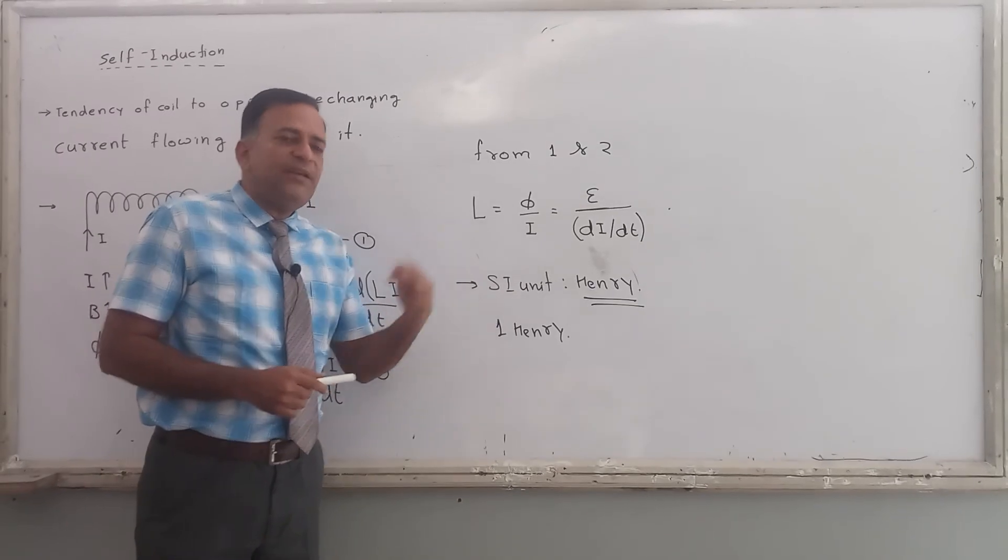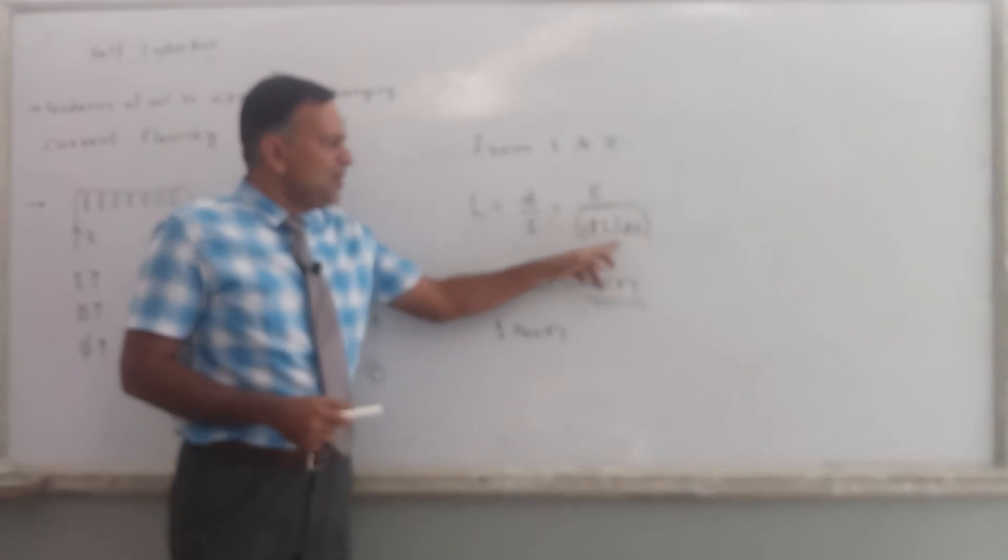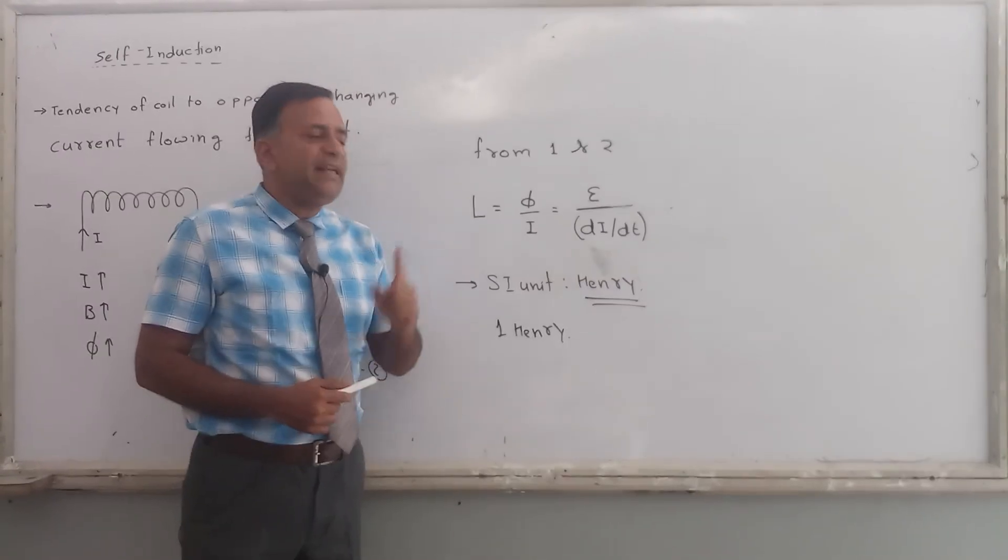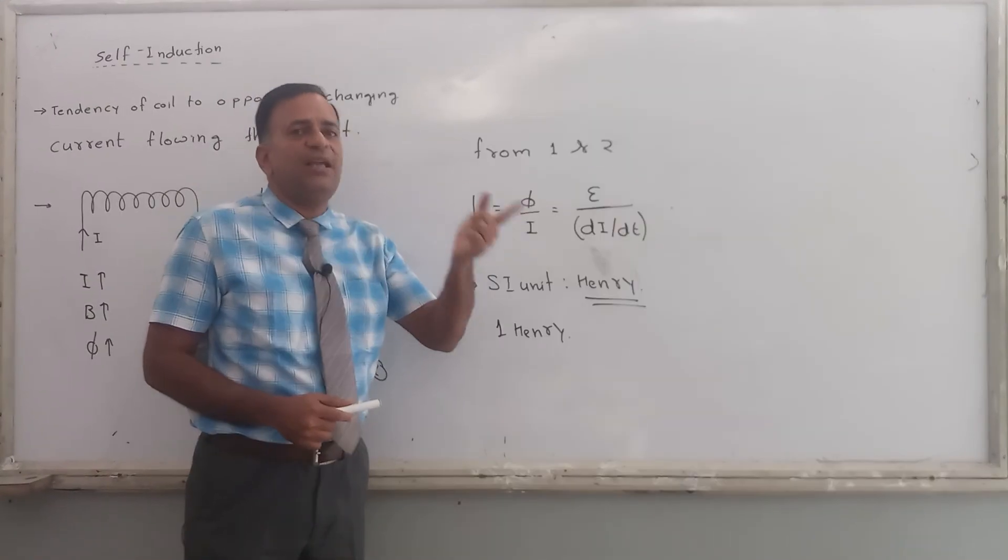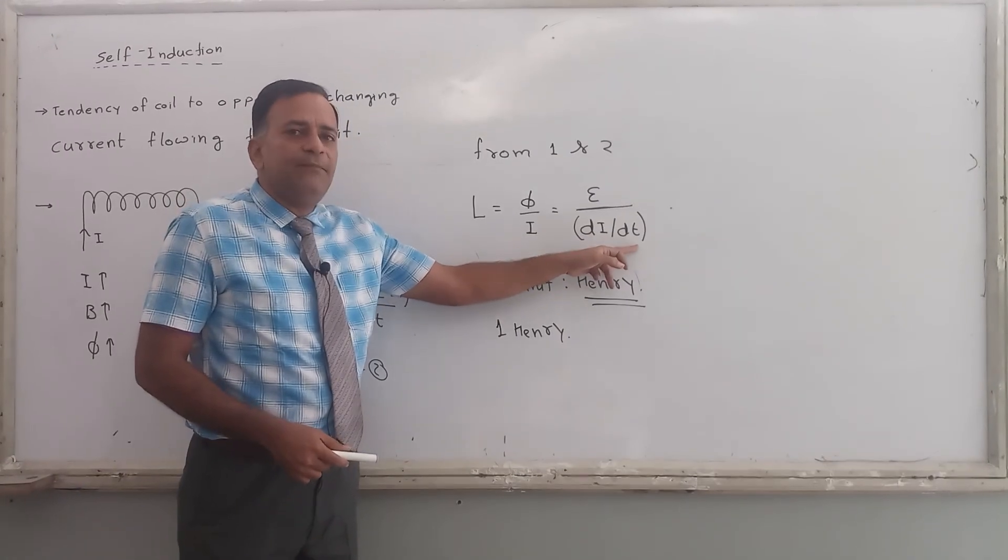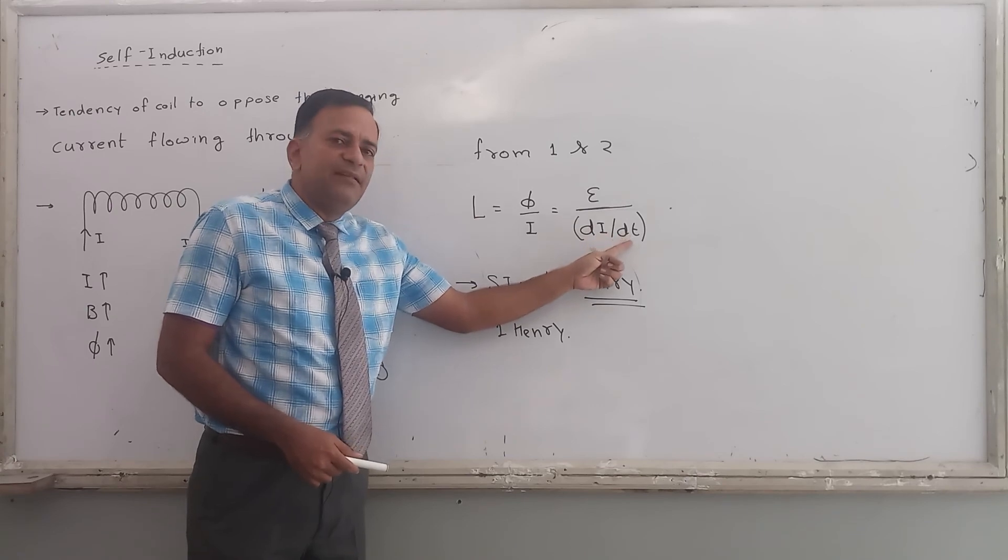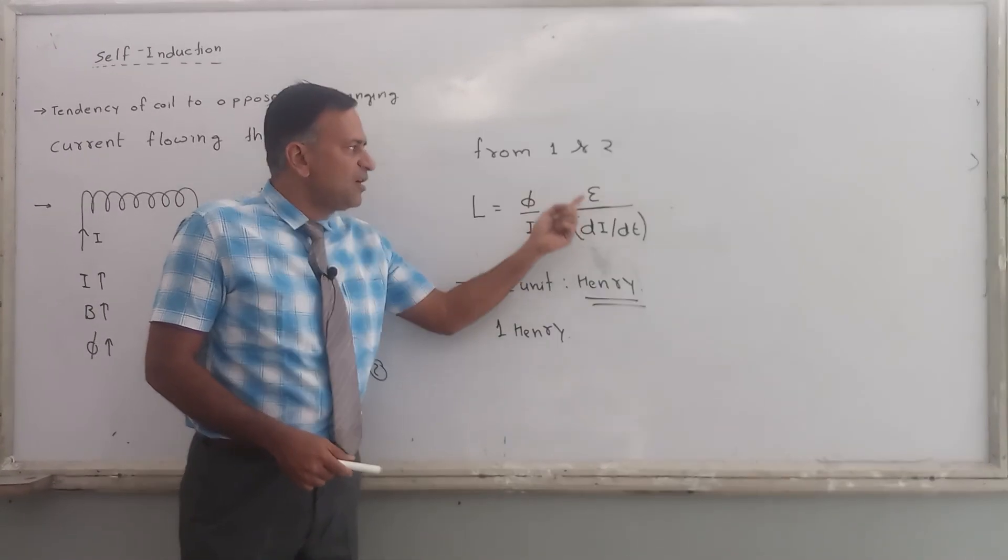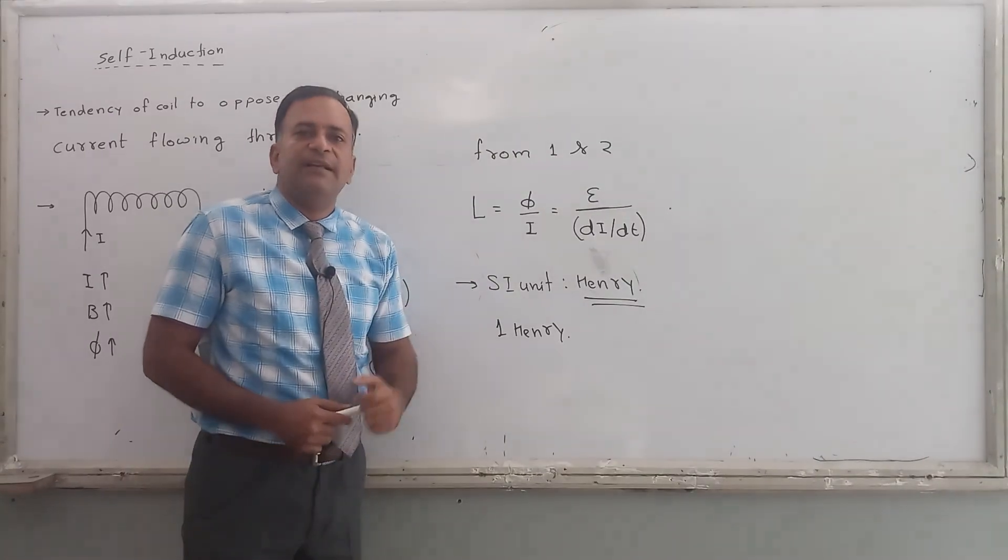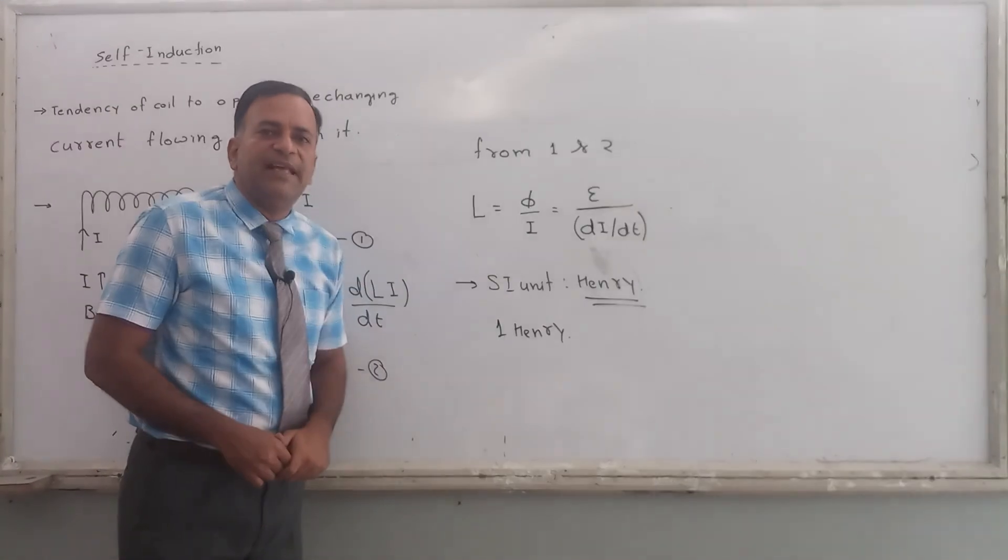First definition. Second definition. If the rate of change of current through a coil is 1 ampere per second and the induced EMF in the coil is 1 volt, then the self-inductance of the coil is 1 Henry.